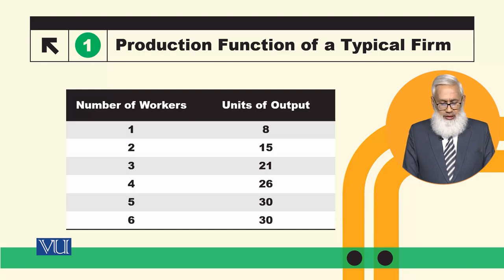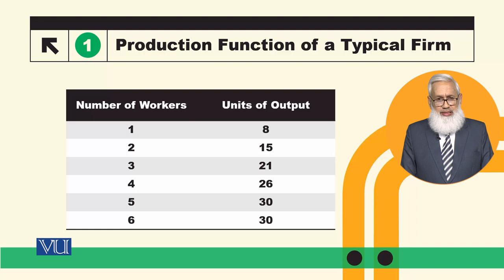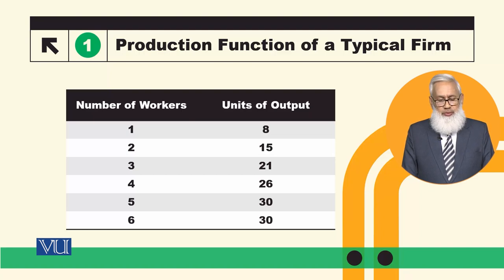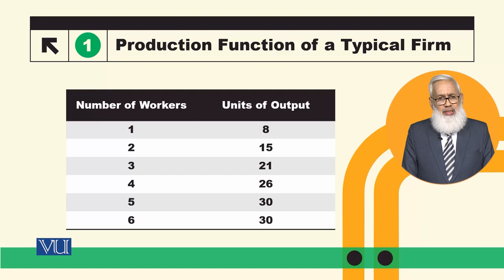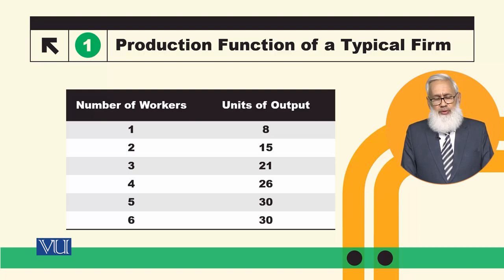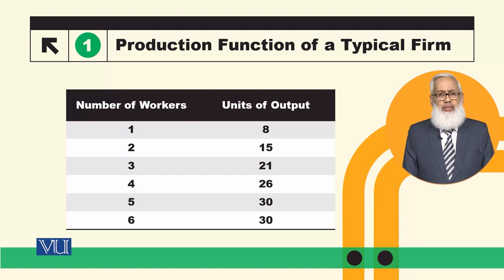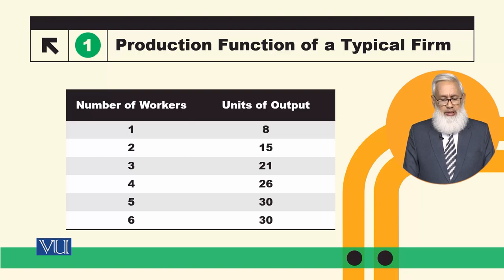Three workers give 21 units and so on. One thing is that the number of workers is increasing, so total output is increasing: 8, 15, 21, 26 and so on. So if we connect with the previous lecture, we have seen that the marginal product of labor is positive. Positive means that as the number of workers increases, total output is increasing.